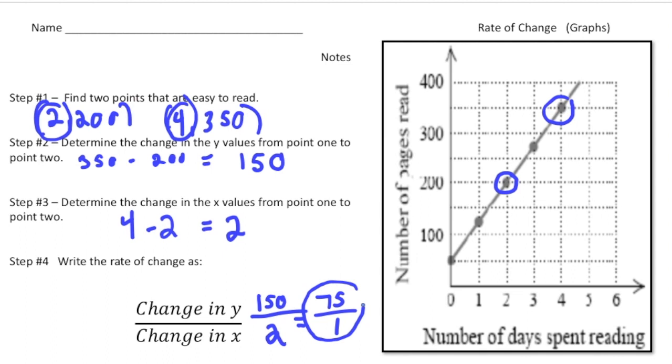Step four: write the rate of change as a fraction — the change in Y was 150 over the change in X of two. That simplifies to 75 over one, so our rate of change is 75 pages per day.